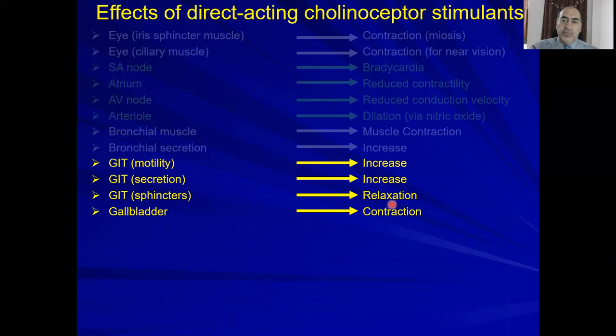Gallbladder contraction releases bile and bile salts, which emulsify lipids — because lipid-digesting enzymes are proteins and therefore hydrophilic, they cannot directly interact with lipids. After emulsification, pancreatic enzymes released into the duodenum can effectively digest the fats.